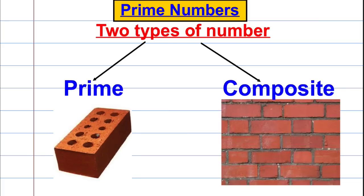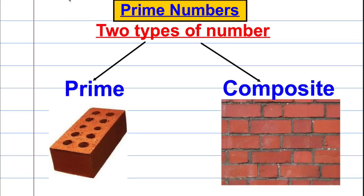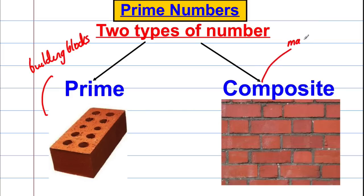A prime number is the simplest form of number — it is the building block. It can't be broken down anymore. Prime numbers are like building blocks. A composite number is made up of prime numbers, like a wall made up of bricks — a prime here, a prime here, a prime here. So numbers generally fall, apart from one exception, into two categories: they are either prime, the building blocks of all other numbers, or they are composite, numbers made up from the primes being put together.